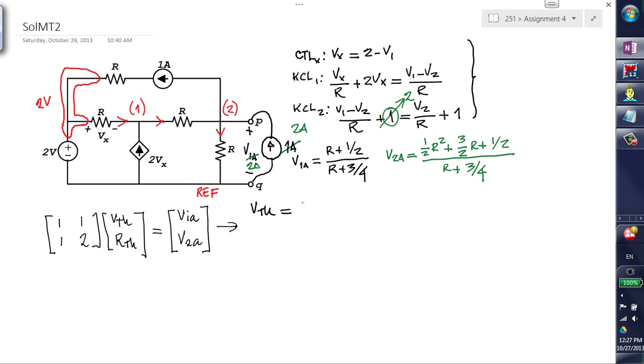V7N is 2 times V1A minus V2A. Now, in the different 4 types of exams, R was 2, 3, 5, or 7 ohms. Do the substitution and find the right values for your type of exam.